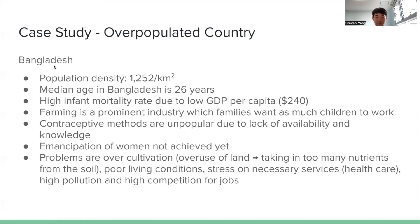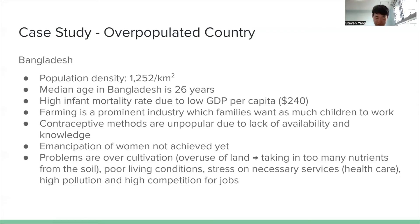The problems of this overpopulation include over-cultivation in rural areas — the overuse of farmland that takes too many nutrients from the soil, causing it to lose fertility. In urban areas, there are poor living conditions, stress on necessary services especially healthcare, and high competition for jobs leading to high unemployment.